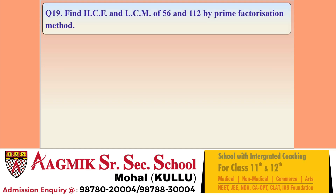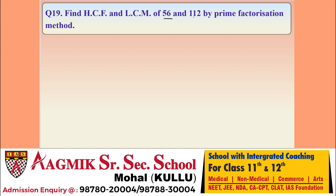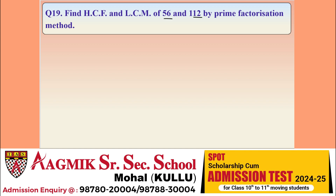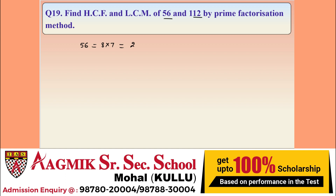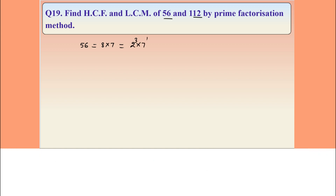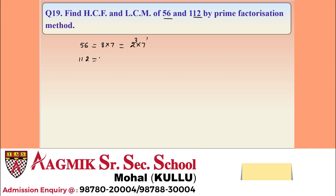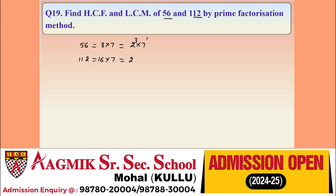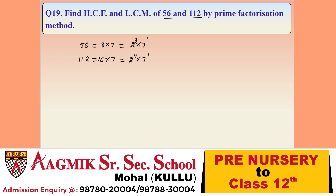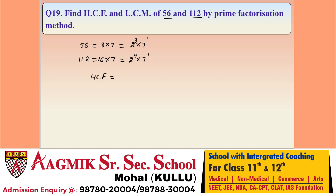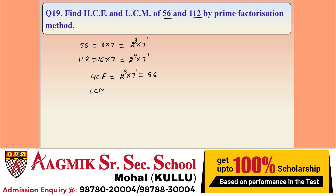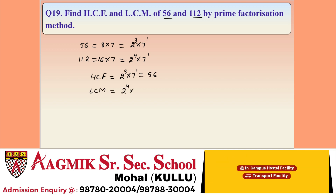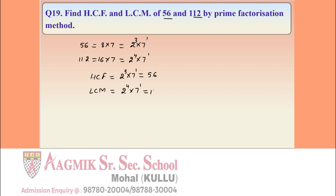Question 19: find the HCF and LCM of 56 and 112 by prime factorization. 56 = 2³ × 7¹ and 112 = 2⁴ × 7¹. HCF takes minimum powers: 2³ × 7¹ = 56. LCM takes maximum powers: 2⁴ × 7¹ = 112.